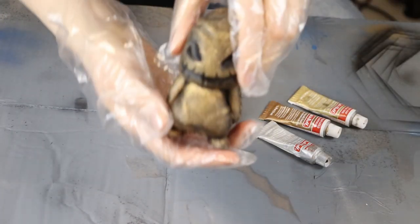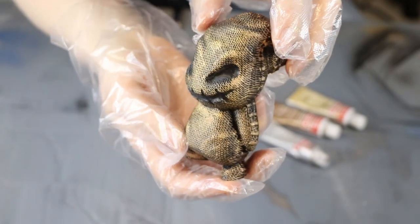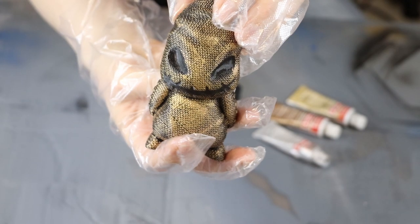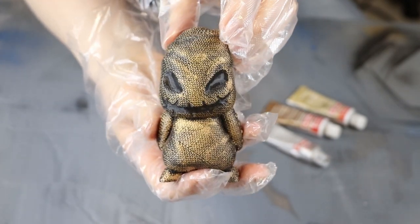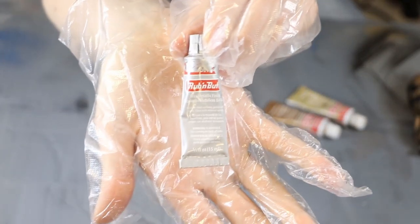So for gold, that's how I did my Oogie Boogie. And I have a time-lapse video of me doing the Rub'n Buff on Oogie Boogie, if you want to check that out. I will put a link in the description for that video. But today we're going to be using the silver Rub'n Buff.